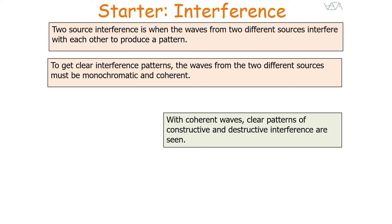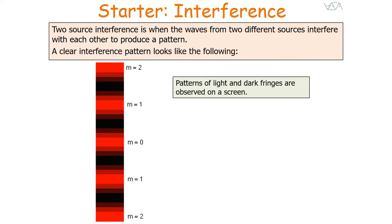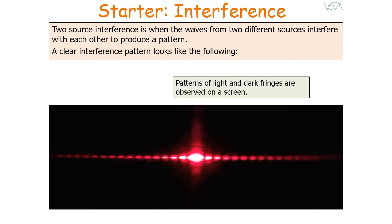With coherent waves, clear patterns of constructive and destructive interference are seen. If we look at this pattern on a screen, you would see patterns of light and dark fringes if the two wave sources were light. You can observe this in the real world with two laser sources interfering with each other and producing a pattern on a screen.